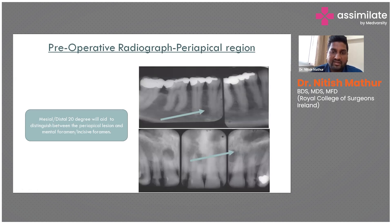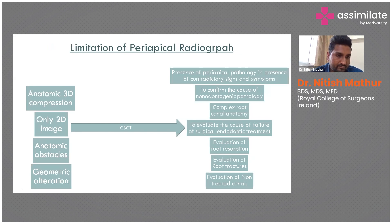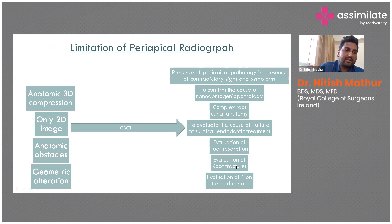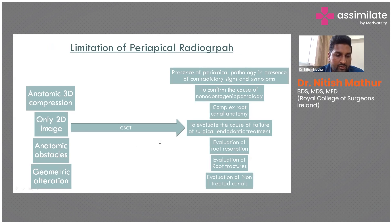A single x-ray can mislead you; you need at least two x-rays. A key limitation of the periapical radiograph is that it misses the third dimension and gives only a 2D image.